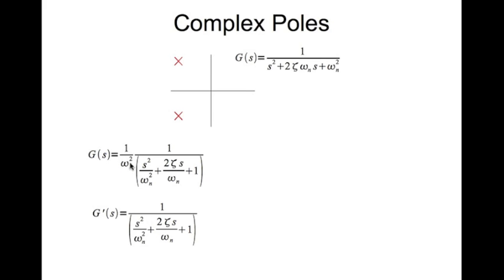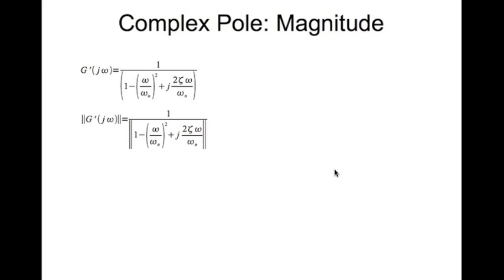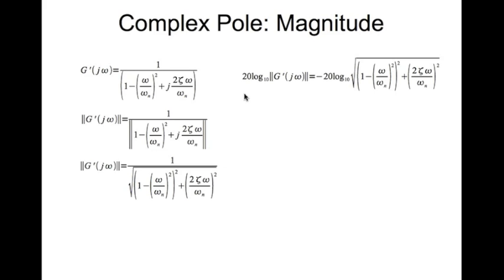This part, as shown in the previous lectures, will go into the board. We substitute s equal to jω and get the resulting expression. The imaginary part and the real part are identified. Taking the magnitude of g-dash gives us the square root of the real part squared plus the imaginary part squared. In decibels, that is 20 log base 10 of the magnitude.